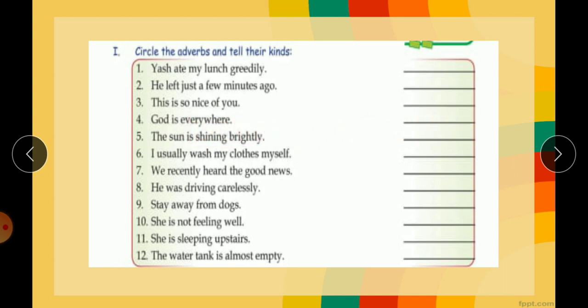God is everywhere. Everywhere word is adverb and that is adverb of place. The sun is shining brightly. Brightly word is telling you the manner, so it is adverb of manner. I usually wash my clothes myself. Now usually, words like usually, never, seldom, these all are adverb of frequency because they tell you how many times or how frequently that action is done. So usually is adverb of frequency.